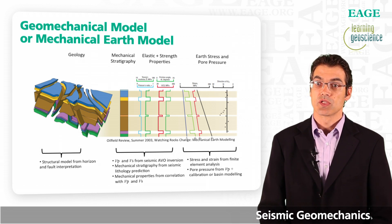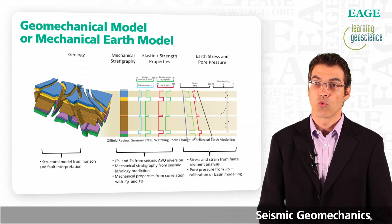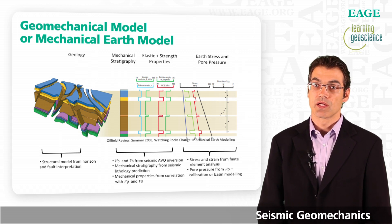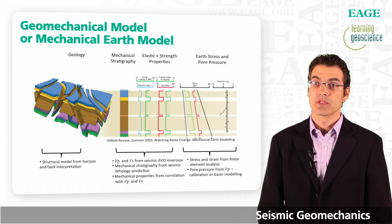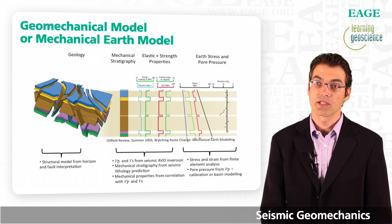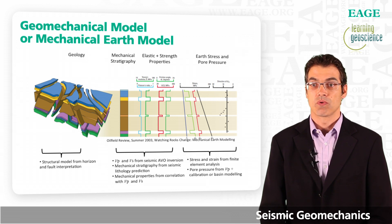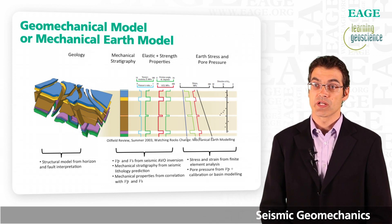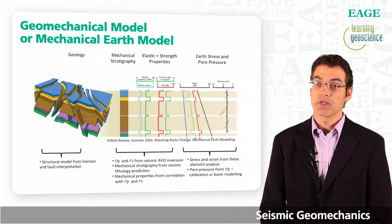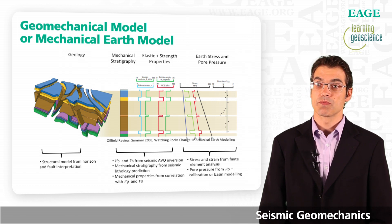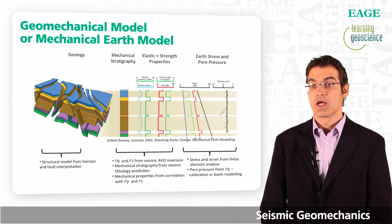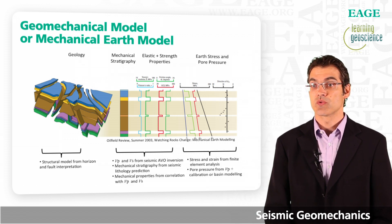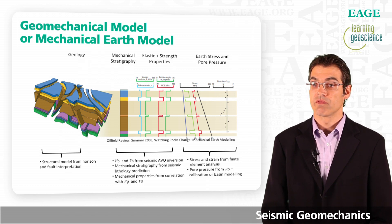The reason why we group together materials of similar mechanical properties is so that we can assign plastic behaviors according to earth materials. For example, salts will creep, so we assign a lithology to all salt rocks. The structural framework model uses horizon and fault interpretations from seismic. The mechanical stratigraphy and elastic and strength properties can be derived using VP and VS velocities from seismic AVO inversion. Mechanical properties are then calculated using correlation functions with the AVO inversion-derived VP and VS velocities.